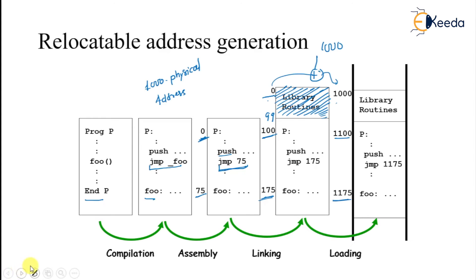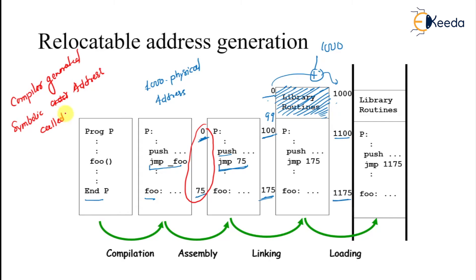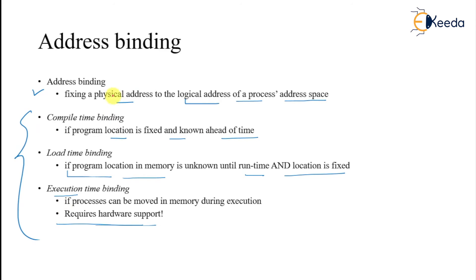The first thing to notice is which address we are calling a logical address. Logical addresses are those addresses which are generated by your compiler — compiler generated symbolic addresses are called logical addresses. So that is what we are calling them. And that will be mapped to some physical address. So fixing a physical address of a logical address space of a process is called basically binding.